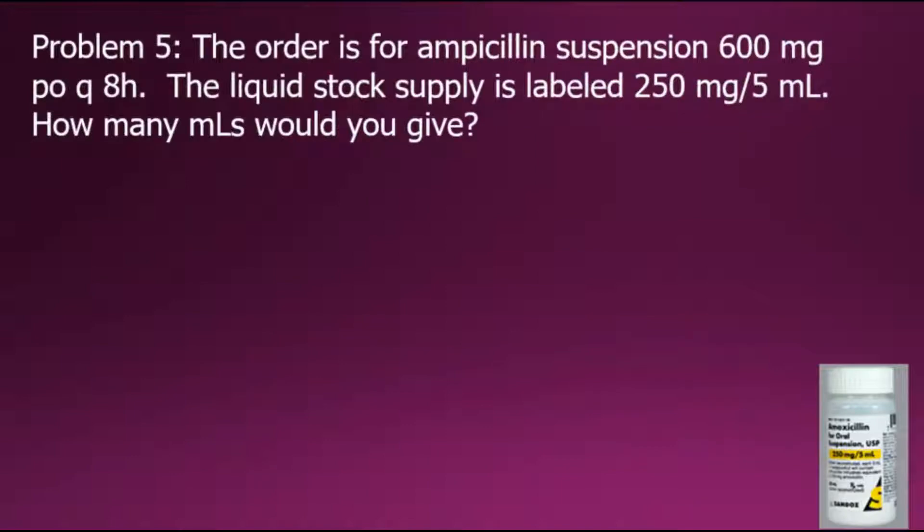Problem 5 states the order is for ampicillin suspension 600 milligrams PO Q8 hours. The liquid stock supply is labeled 250 milligrams per 5 milliliters. How many milliliters should be given?